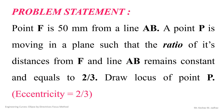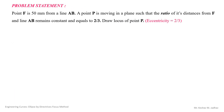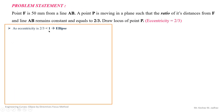Now let us take a problem. Point F is 50 mm from line AB. A point P is moving in a plane such that the ratio of its distances from F and line AB remains constant and equal to 2/3. We need to draw the locus of point P. Since the eccentricity is 2/3, which is less than 1, the curve will be an ellipse. Taking line AB as the directrix and point F as the focus, we can draw the ellipse by the focus directrix method.